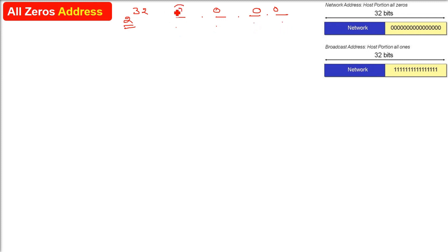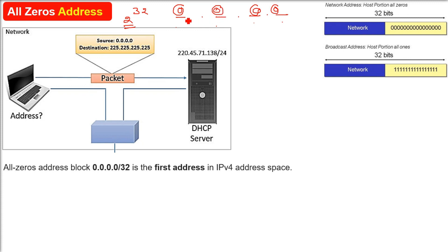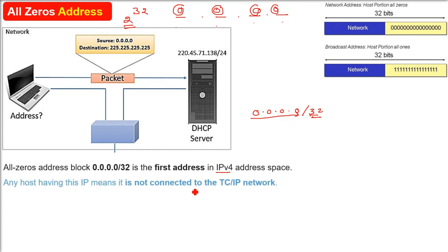The first address, which is all zeros, is called the all-zero address, and this address has special significance — it is reserved, it is blocked. In CIDR form, this is slash 32, meaning it represents the first address space in the range.